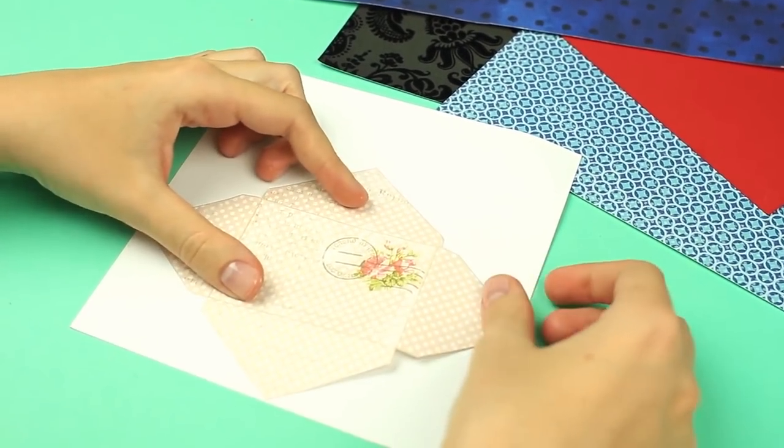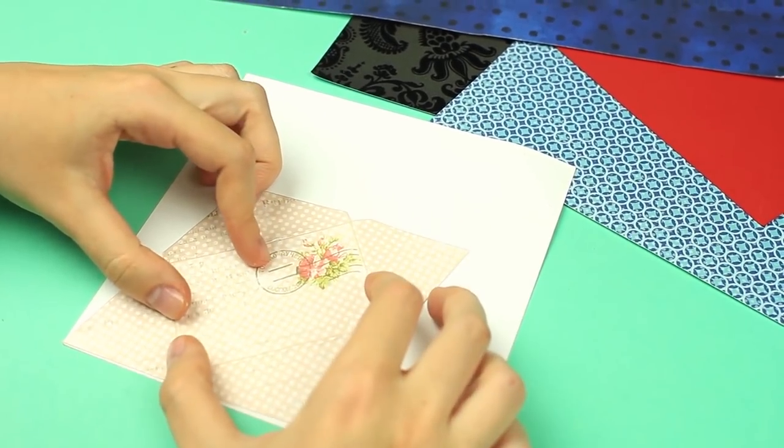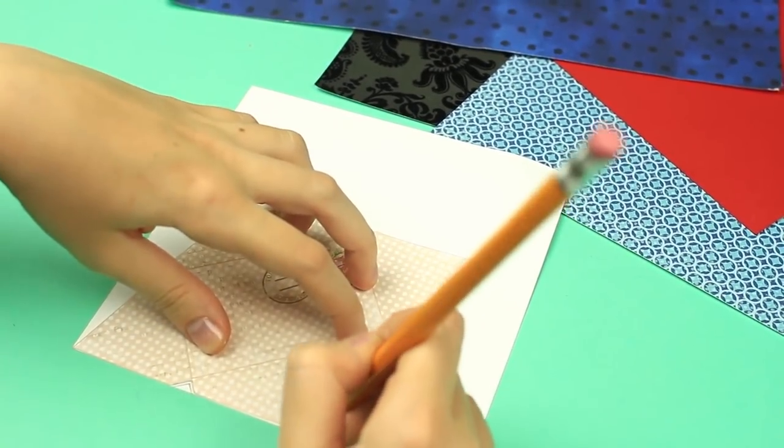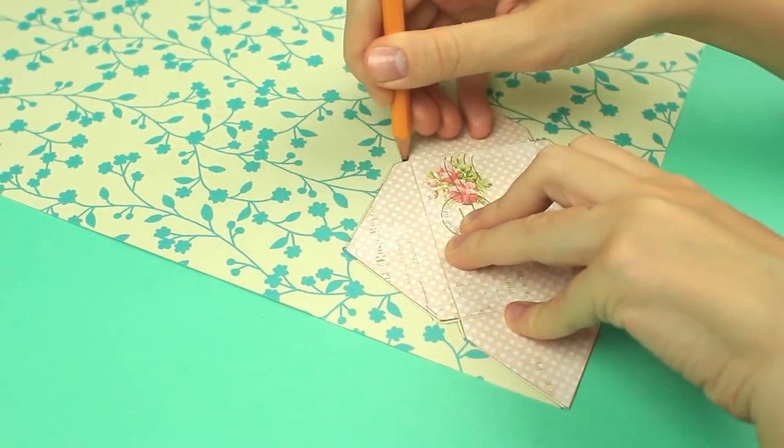We'll need a mini envelope to be used as a template. Place the envelope on the back side of scrapbook paper. Trace it. Cut it out. Prepare several differently patterned envelopes.